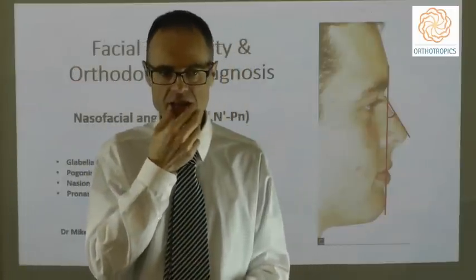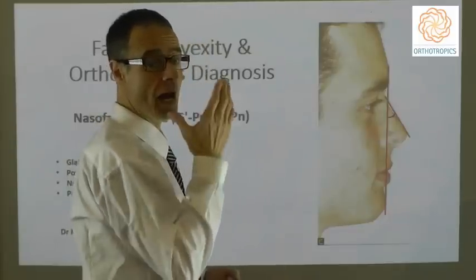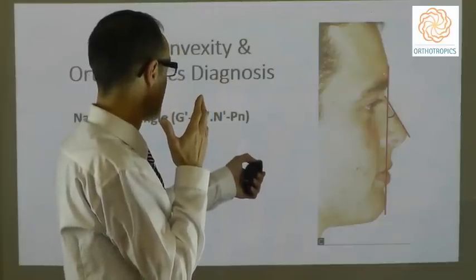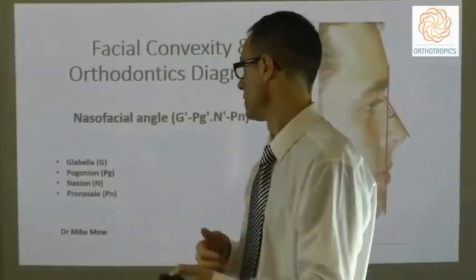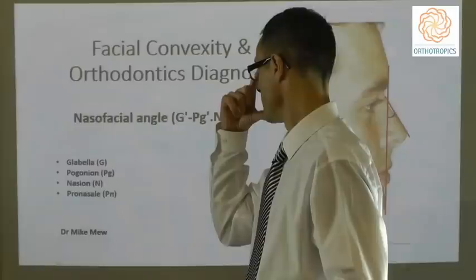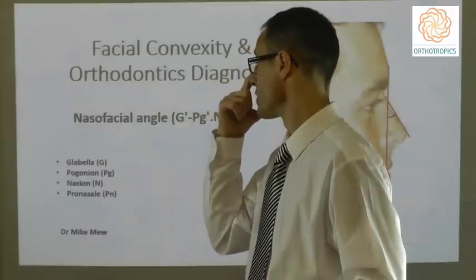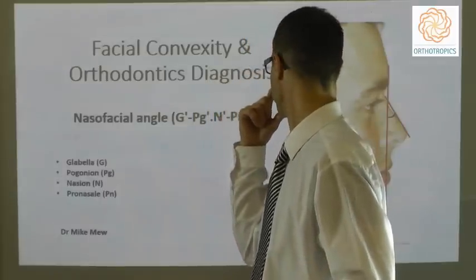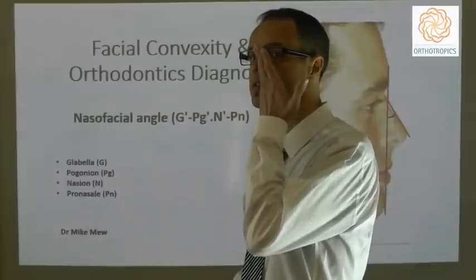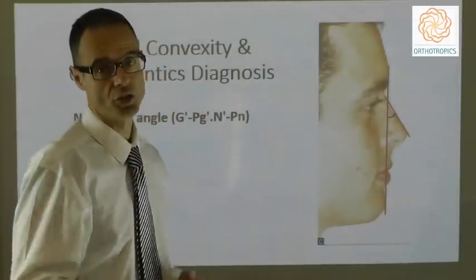Then we look at the naso-facial angle, which looks at the angle between the nose and the face. Making points from glabella to pogonion, then nasion — just at the base — and pronasale, down on the front of the nose. By taking an angle looking at the base and then out onto the bridge of the nose, it really gives you an angle on the angulation of the nose itself.